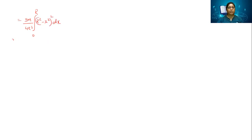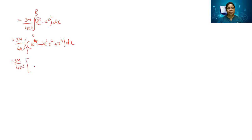This simplifies to (3m / 4r³) ∫₀ʳ (r² − x²)² dx. I will expand the square: (r² − x²)² = r⁴ − 2r²x² + x⁴. So the integral becomes (3m / 4r³) ∫₀ʳ (r⁴ − 2r²x² + x⁴) dx. Integrating term by term, I get (3m / 4r³) [r⁴x − 2r²x³/3 + x⁵/5] evaluated from 0 to r.